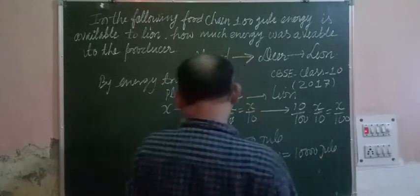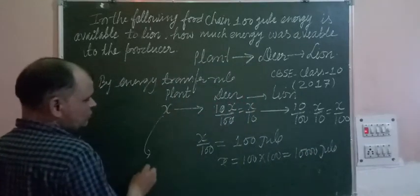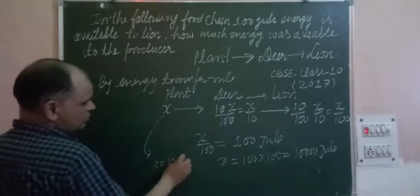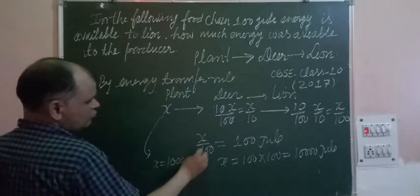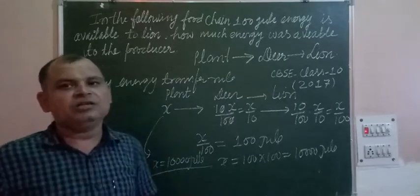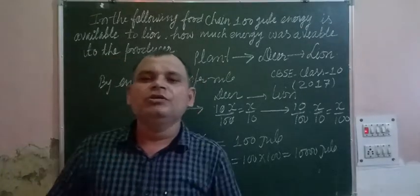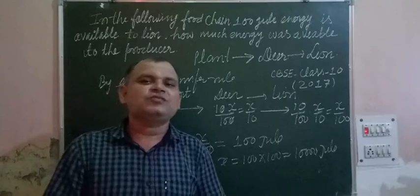So energy of plant or energy of producer X equals 10,000 joule. This is the law of transfer of energy from one stage to another stage. I hope you understood it. Thanks very much.